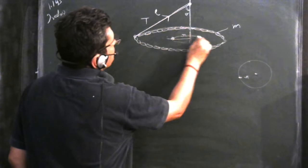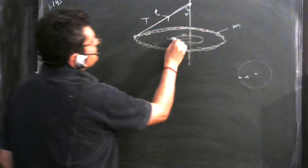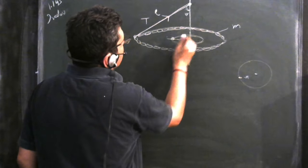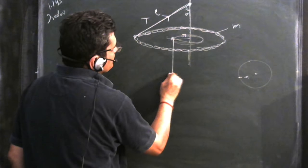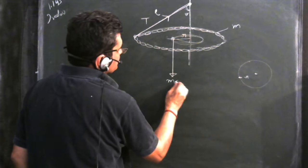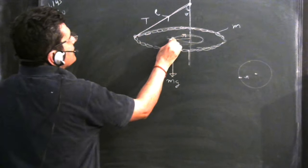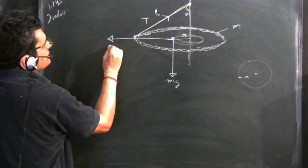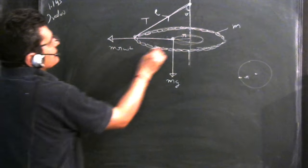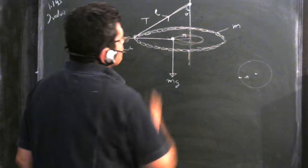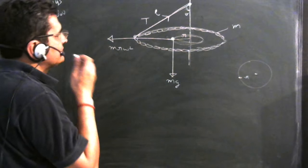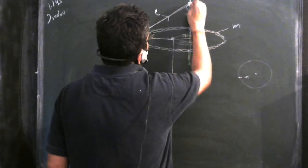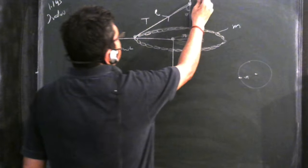This is the circle in which the center of the chain is rotating, and let this be R. The weight will act along the center of mass, and the centrifugal force MR omega square will also act through the center of mass. Let us take the moment of the forces along point O.